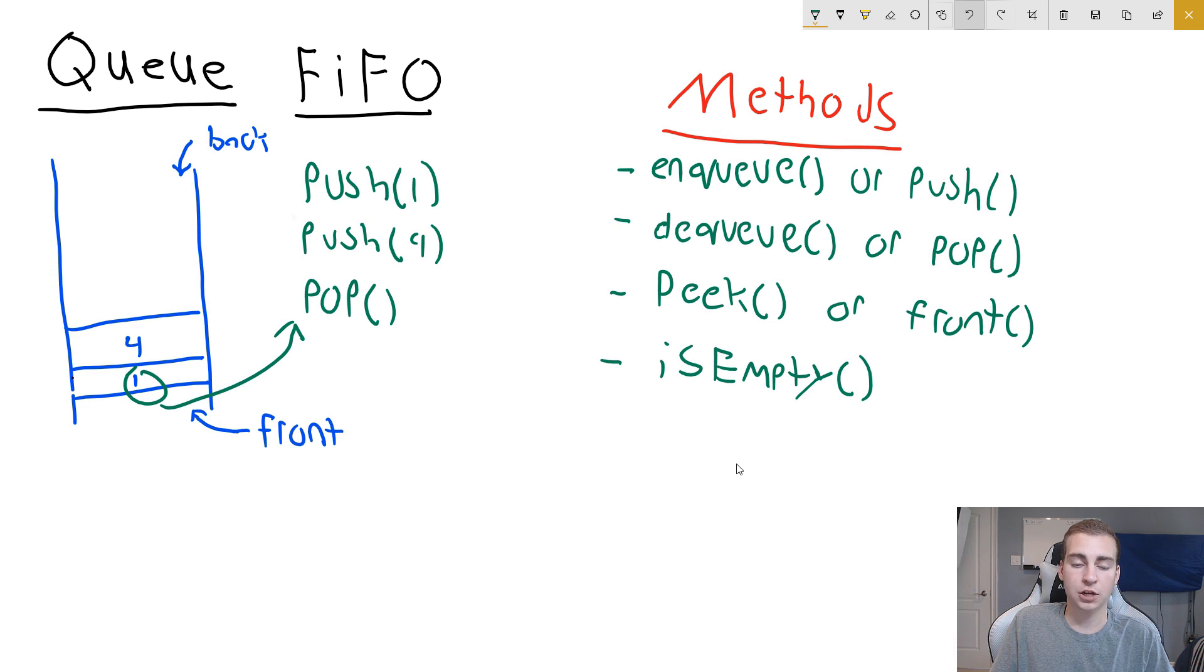Now what actually happens is inside of our queue that item is removed as well. So when we call pop, one will be removed and now four is the very front of our queue. And the next time we call pop, we will get four. That is all there is to adding and removing items from the queue.